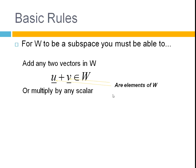And you have to be able to multiply by any scalar. So, K times some vector U. K is just a constant, a scalar. K times U is still in W. This symbol here just means part of the set.